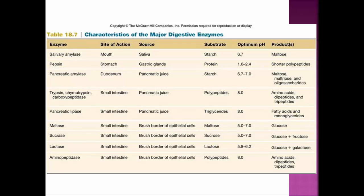Here are the enzymes responsible for digestion. Salivary amylase is first secreted by the salivary glands into the mouth — that's where digestion of starch begins. Pepsin comes from the stomach wall into the stomach to digest proteins. Then there are several pancreatic enzymes: pancreatic amylase digests starch in the duodenum; trypsin, chymotrypsin, and carboxypeptidase break down polypeptides or proteins in the small intestine; and lipase breaks down triglycerides into fatty acids and monoglycerides. All three come from the pancreas but act on different substrates.